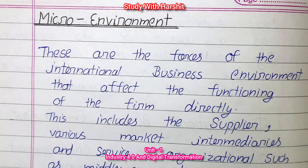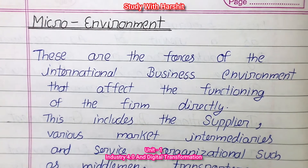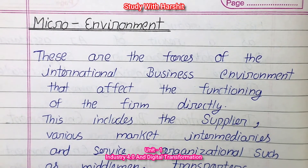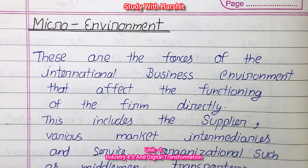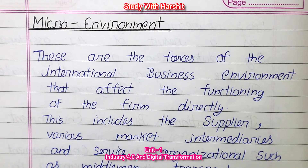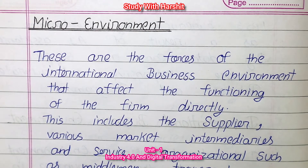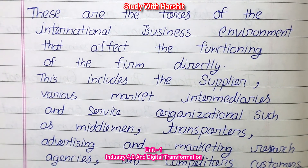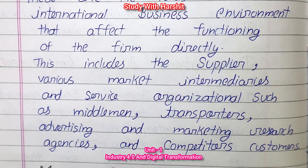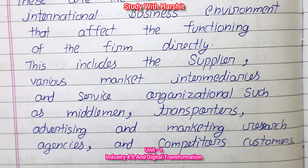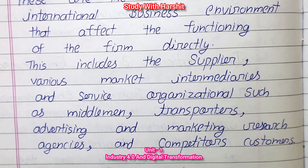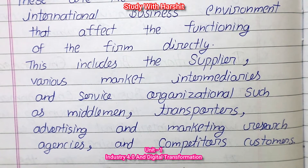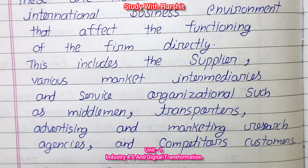Micro Environment: These are the forces of the international business environment that affect the functioning of the firm directly. This includes suppliers, various market intermediaries, service organizations such as middlemen, transporters, advertising and marketing resources, and competitors' customers.